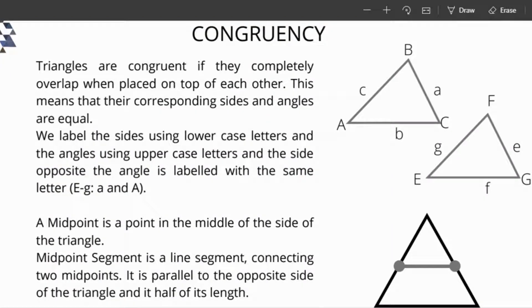Let's start with congruency. Congruent means the same in terms of every part of it. So triangles are congruent if they completely overlap when placed on top of each other. They have to be the same size, the same shape, and have the same angles. Their corresponding sides and angles are equal.